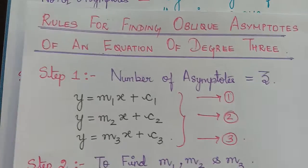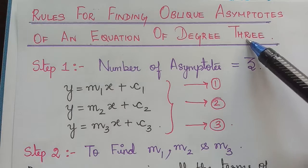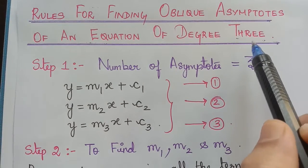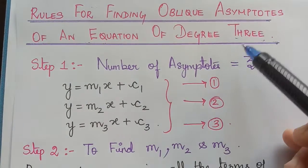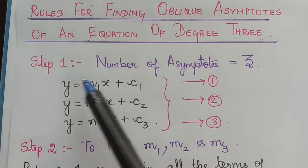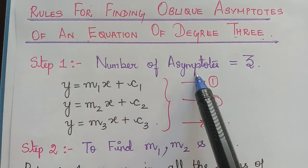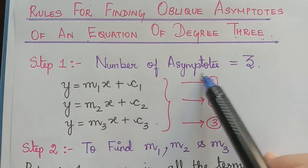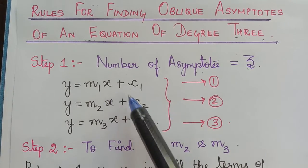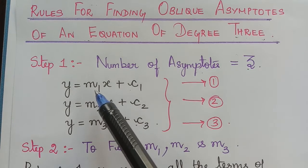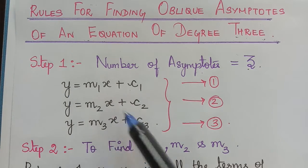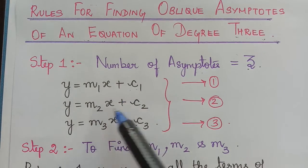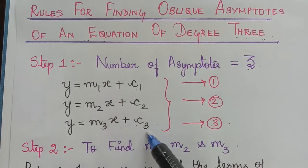In particular, if the given equation is a cubic equation — that is, of degree 3 — then there will be 3 oblique asymptotes. The first step is to write the number of asymptotes as 3, giving us three equations: y = m₁x + c₁, y = m₂x + c₂, and y = m₃x + c₃.